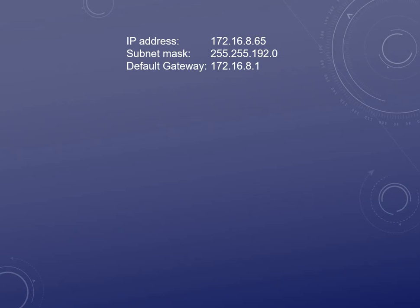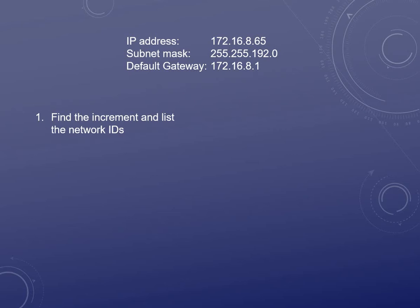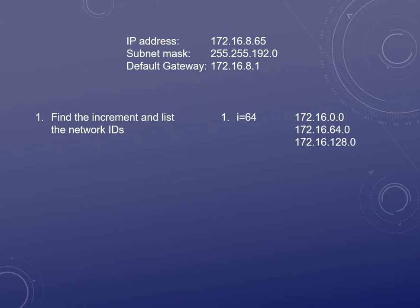One more example: 172.16.8.65 with a subnet mask of 255.255.192.0, and a default gateway of 172.16.8.1. Again we have to find the increment — where is the last bit in 192? It's going to be in the 64 slot. Now we list out our addresses: 172.16.0, 172.16.64, and 172.16.128.